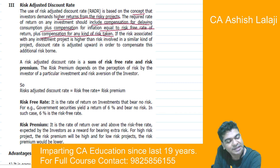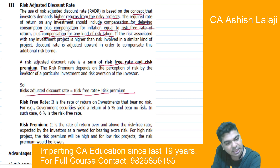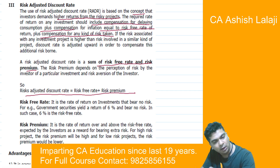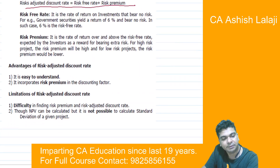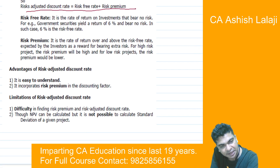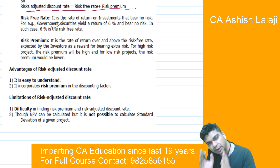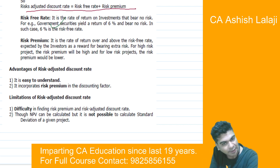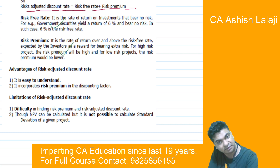A risk-adjusted discount rate is a sum of the risk-free rate and the risk premium. The risk-free rate is the return that you will get without taking any risk at all — a government security is normally considered to be the risk-free security. Risk premium is the extra return that we are demanding on account of the risk that we are undertaking.